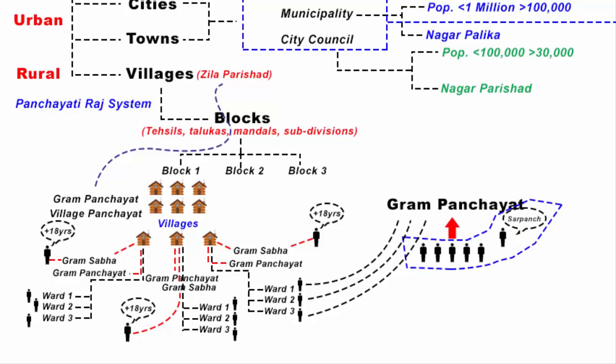Together they form the Gram Panchayat and are elected for 5 years. In parallel, in state and central government elections, citizens elect an MLA and an MP — MLAs then elect a Chief Minister and MPs elect the Prime Minister. Similarly at village level, local people elect ward members, and all ward members together elect a Sarpanch, who becomes the president and head of the Gram Panchayat.